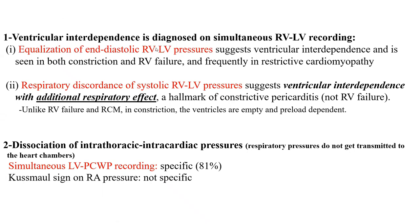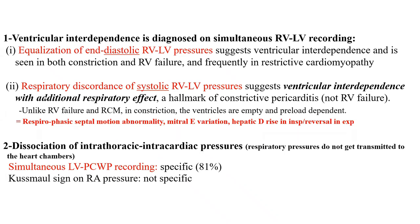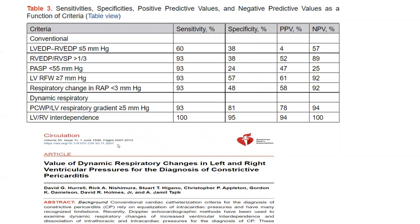By the way, ventricular interdependence with additional respiratory effect is also well seen on echo as respirophasic septal motion abnormality, mitral E-wave variation, and hepatic vein flow — deep flow rise in inspiration and reversal in expiration. These reflect the same phenomena as the cath findings. These findings were validated in an old 1990s paper from Mayo Clinic by Dr. Nishimura's group. The dynamic respiratory findings of ventricular interdependence are the only specific findings; Kussmaul's sign has specificity less than 50%, and equalization of diastolic pressure has specificity of 38% with a positive predictive value of only 4%.